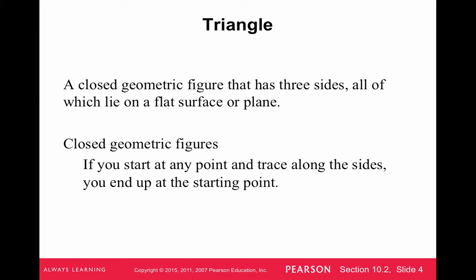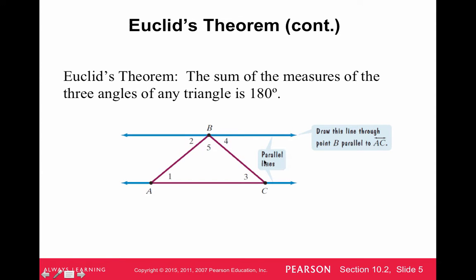So basically, this is a very formal definition that they have here, but a triangle we can just think of as a three-sided figure. Here's an example of one right here, and one of the first things that we go over with a triangle is that the sum of the measures of the three angles of any triangle is always going to be 180. So the three angles are angle 1, angle 5, and angle 3, and they always add up to 180.